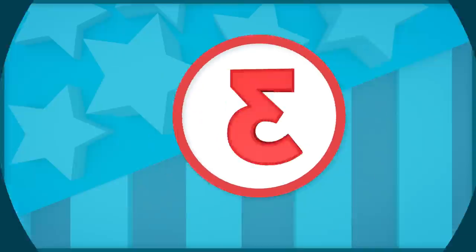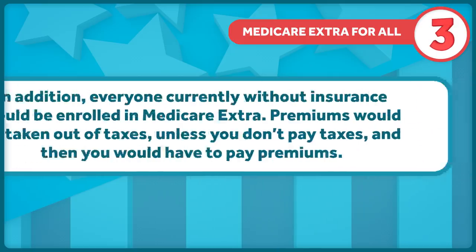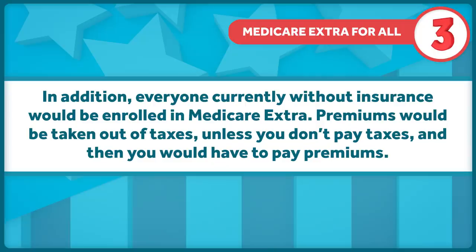There are two more plans that fight for universality, but with more retention of the current system. The first is the Center for American Progress' Medicare Extra for All. It would enroll all newborns and people turning 65 into Medicare Extra. Therefore, as time went on, everyone would have Medicare Extra. But for now, private insurance would remain intact. In addition, everyone who currently doesn't have insurance would also be enrolled in Medicare Extra.